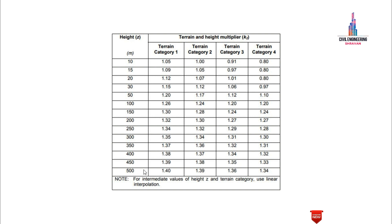For example, if we are constructing a G+5 story building with a height of 6 × 3 = 18 meters, the table provides K2 values only for 15 m and 20 m. We therefore use the 15 m and 20 m values and calculate the terrain coefficient factor for 18 meters using linear interpolation, as specified by IS 875 code.